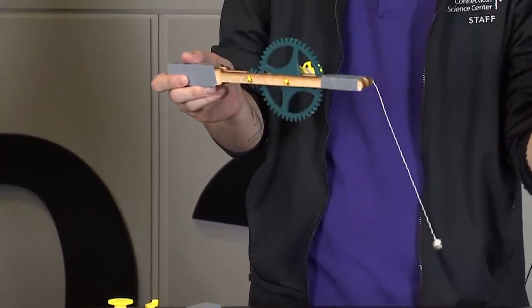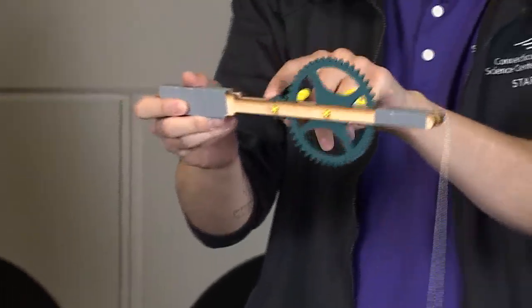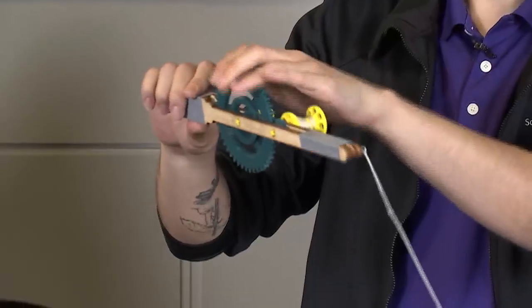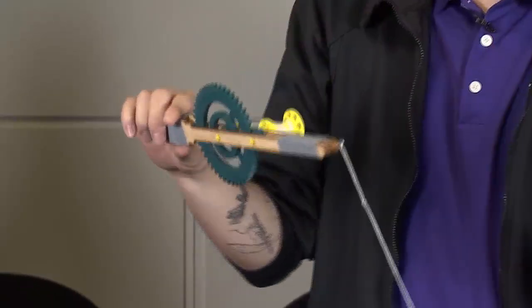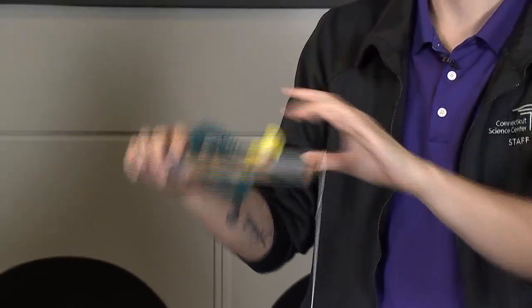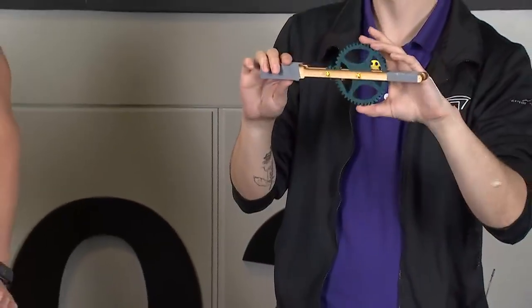So when a gear works you have your driving gear, the one we're spinning. So for me this would be this little one right here. When I pass yours over here your driving gear is gonna be the big gear here. And then the one that's getting moved from the one we're spinning is the driven gear. So you have a smaller driven gear and I'll have the big driven gear.